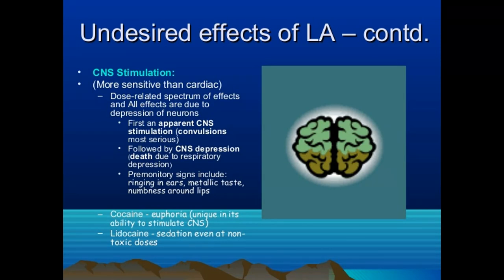CNS toxicity of local anesthetics: there is CNS stimulation, which is dose-related. All effects are due to depression of inhibitory neurons. First, apparent CNS stimulation occurs, with convulsions being the most serious manifestation, followed by CNS depression and death due to respiratory depression. Warning signs include ringing in the ears, metallic taste, and numbness around the lips. Cocaine differs: it is a vasoconstrictor, a cardiac stimulant, and produces euphoria. Lidocaine produces sedation even at non-toxic doses.